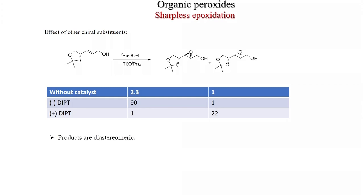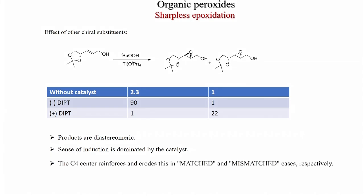The features are: the products are diastereomeric; the sense of induction is dominated by the catalyst. The catalyst can even reverse the selectivity. The C4 stereocenter reinforces in the matched case and erodes selectivity in the mismatched case. When the catalyst reinforces the intrinsic substrate preference, you get a better ratio of the major product; in the mismatched case the ratio is worse.